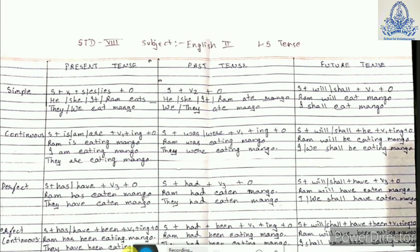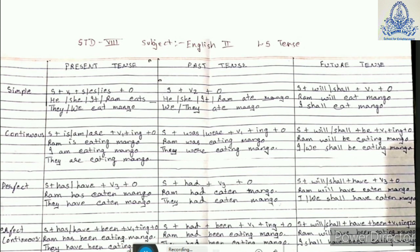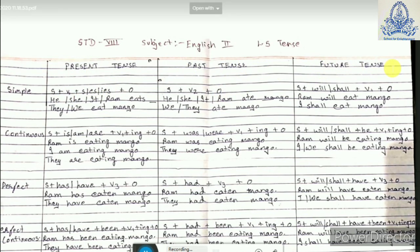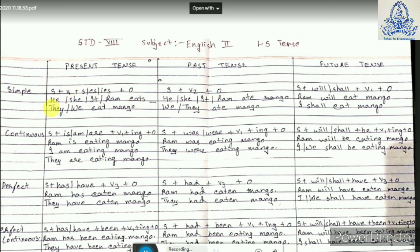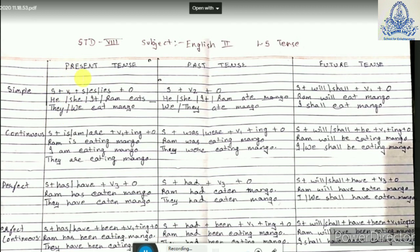Hello students, today I am going to start with the first chapter of your syllabus, that is lesson number five — tense. I am Sanju Singh. There are three kinds of tenses: first is present tense, second is past tense, and third is future tense. There are four forms of the tenses: first is simple, second is continuous, then perfect, and fourth is perfect continuous.